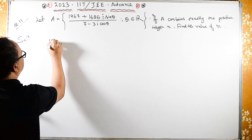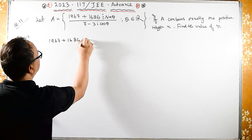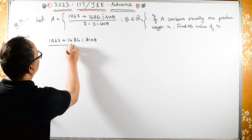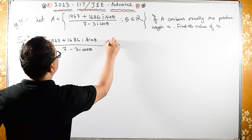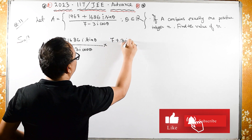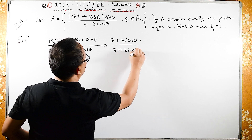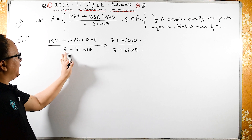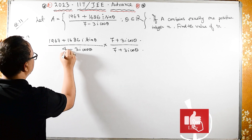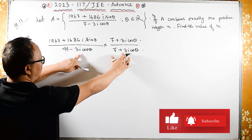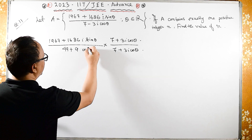So we get 1967 plus 1686i sin theta upon 7 minus 3i cos theta, multiplied by 7 plus 3i cos theta upon 7 plus 3i cos theta. Now here, (a minus b)(a plus b) equals a squared minus b squared. So I can write 49 here, and i squared will come over here. Since i squared is minus 1, we get plus 9 cos squared theta.